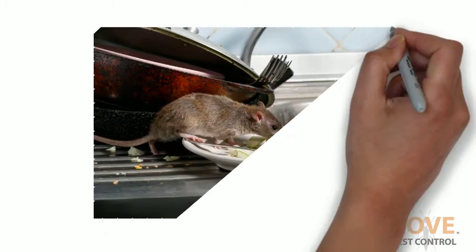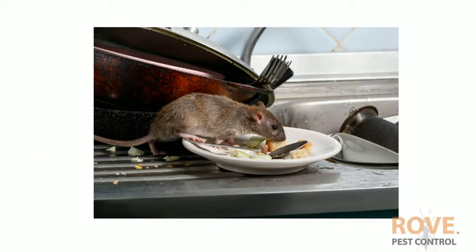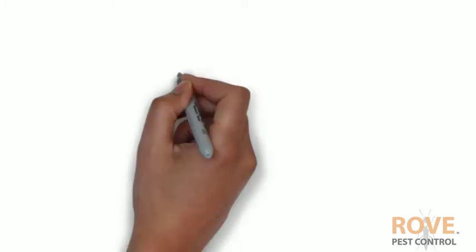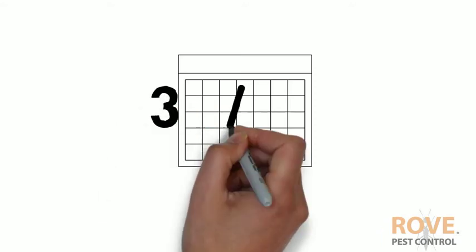Whether pet or pest, rats can contribute unwanted smells. Dead rats release sulfur dioxide and methane as they decompose. The body will take about three weeks to decompose, so finding the corpse and eliminating it is key.